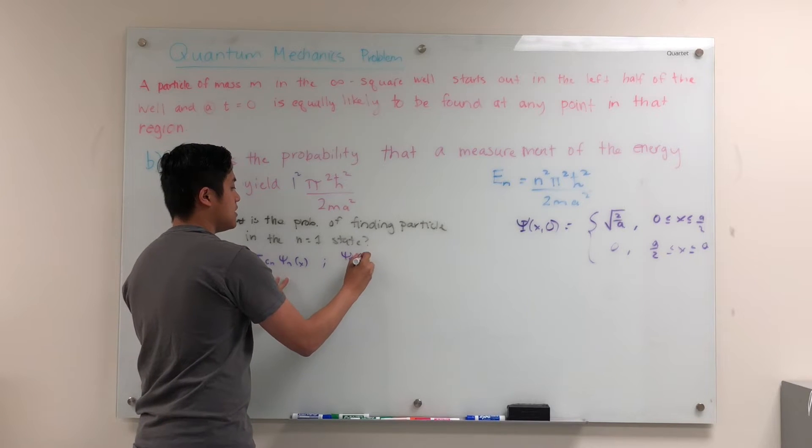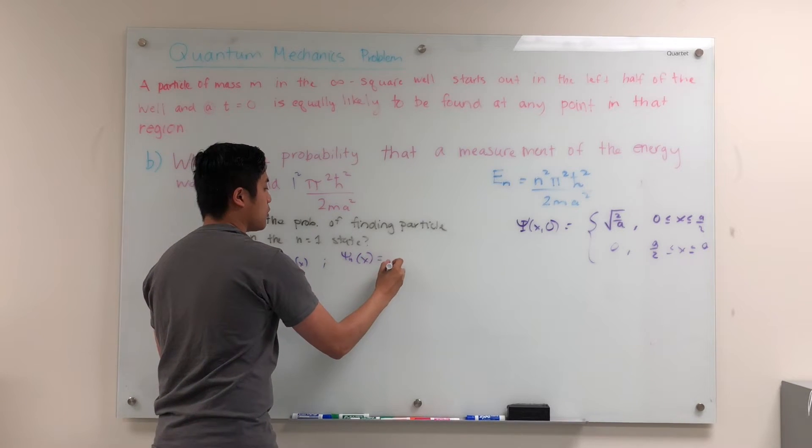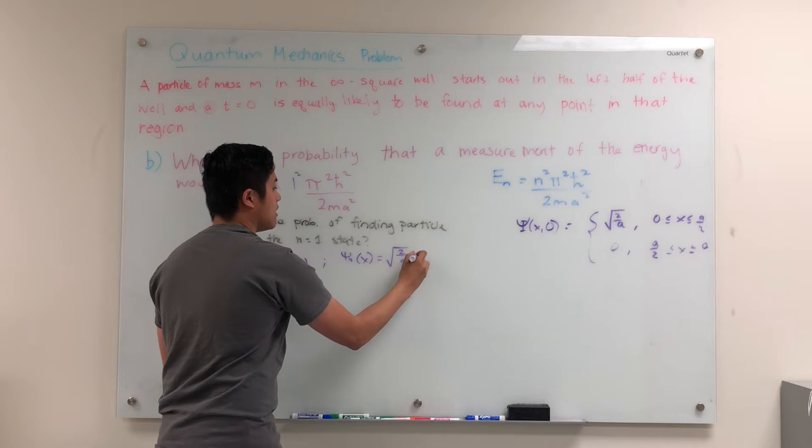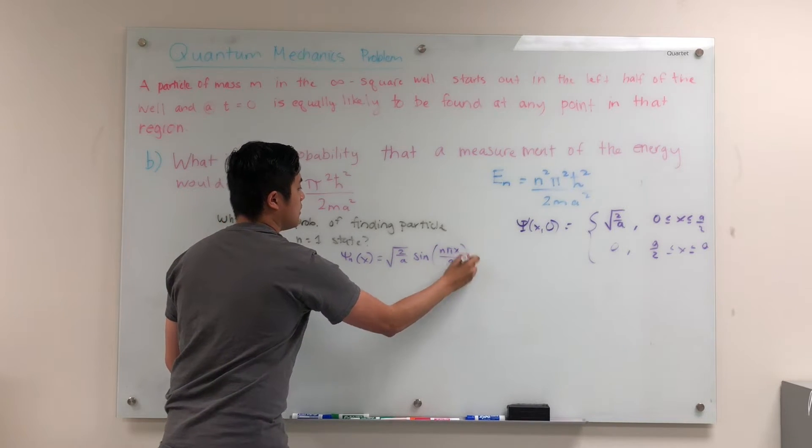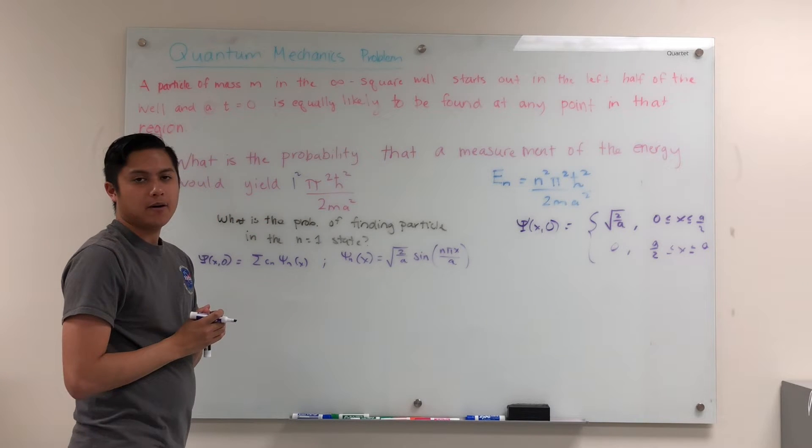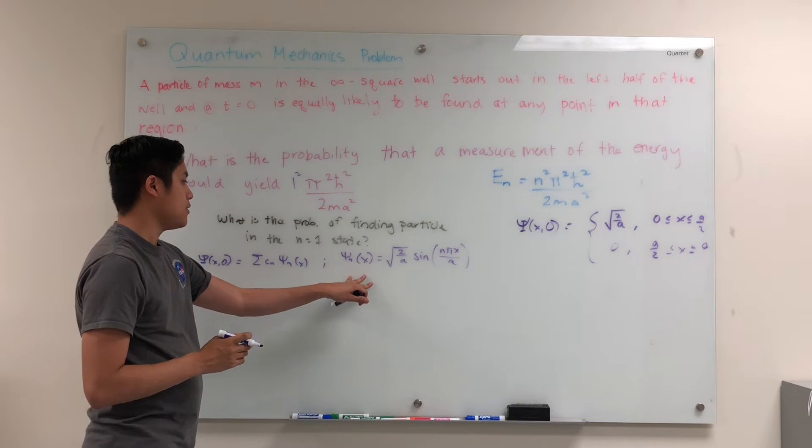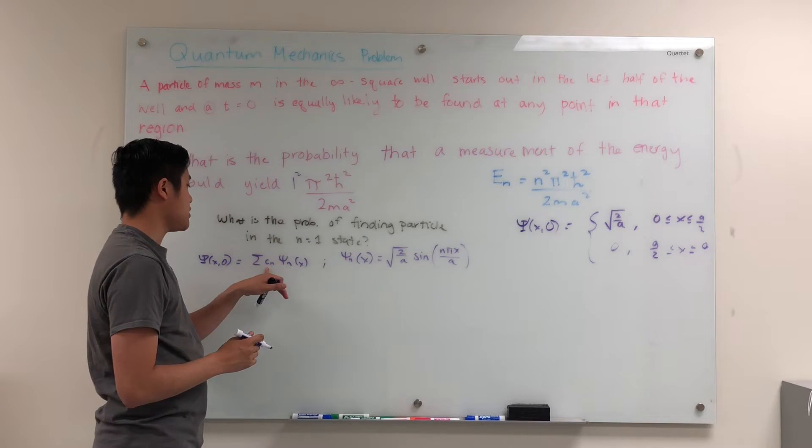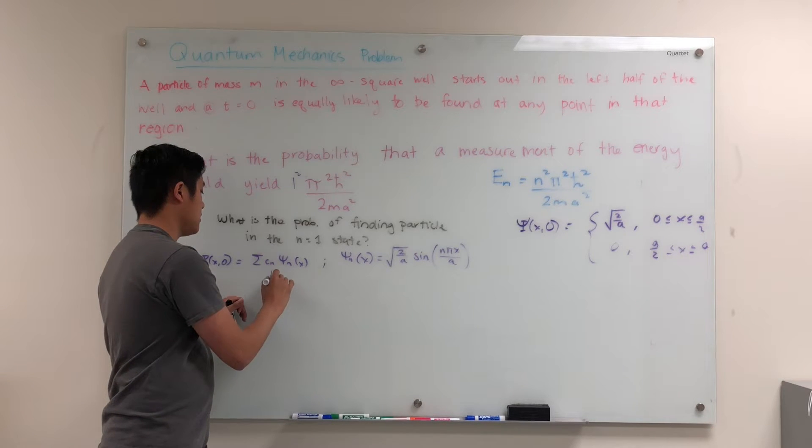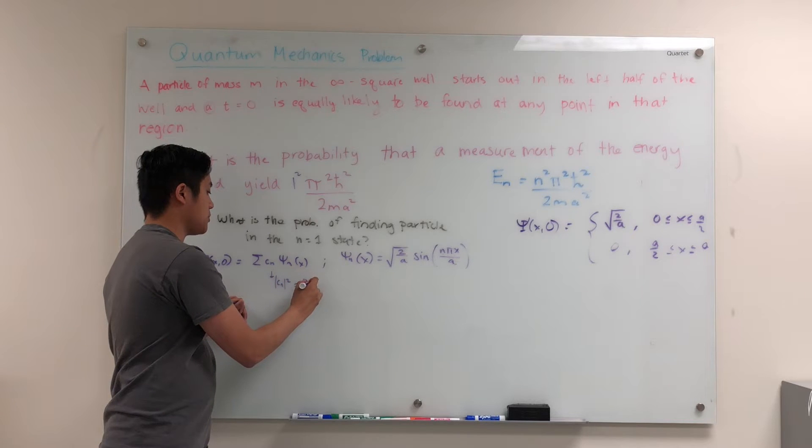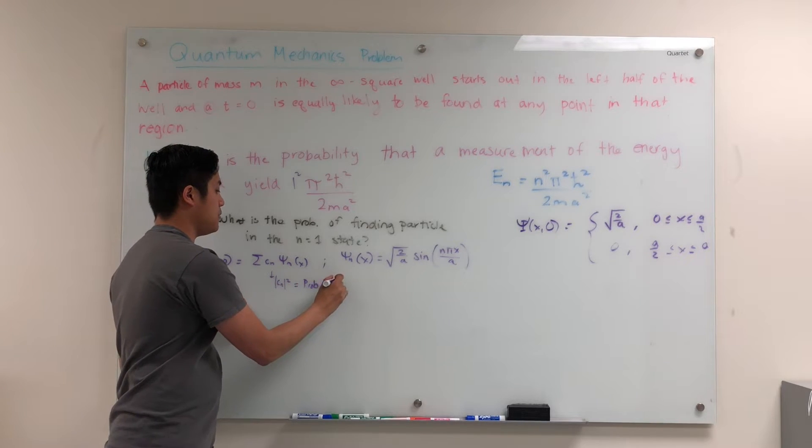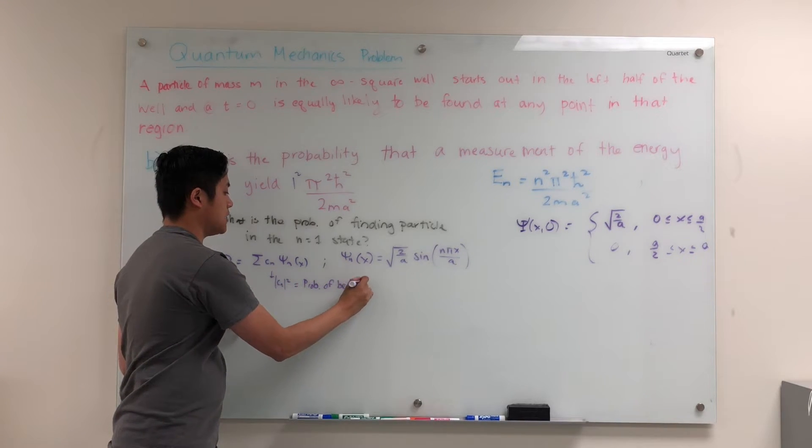And we know that the wave functions in the infinite square well are given by the following formula. Now, we also know that the coefficients, if you take the square of the coefficients, or the modulus, this equals the probability of being in state n.